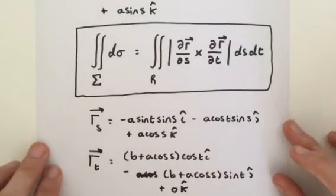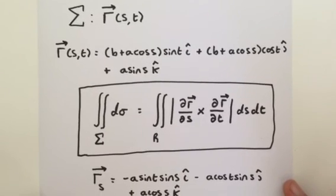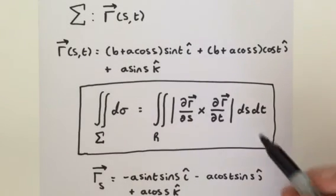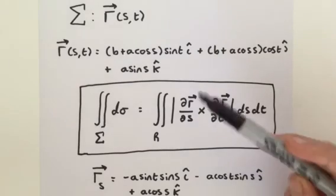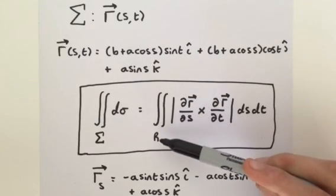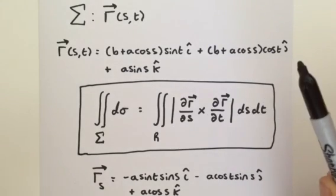So in the next video, using our partial derivatives, we can then calculate the cross product, and when we do that, we can then calculate the double integral over our region, and we should find the formula for our surface area.